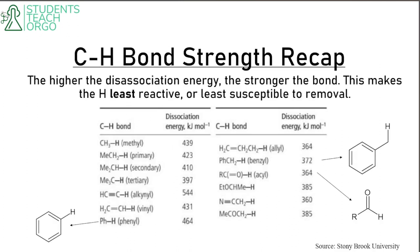Let's go into the recap with carbon-hydrogen bond strength. The higher the dissociation energy on this chart, the stronger the bond. This makes the hydrogen least reactive or least susceptible to removal. So the stronger the bond, the less likely it is for that hydrogen to react or be deprotonated.